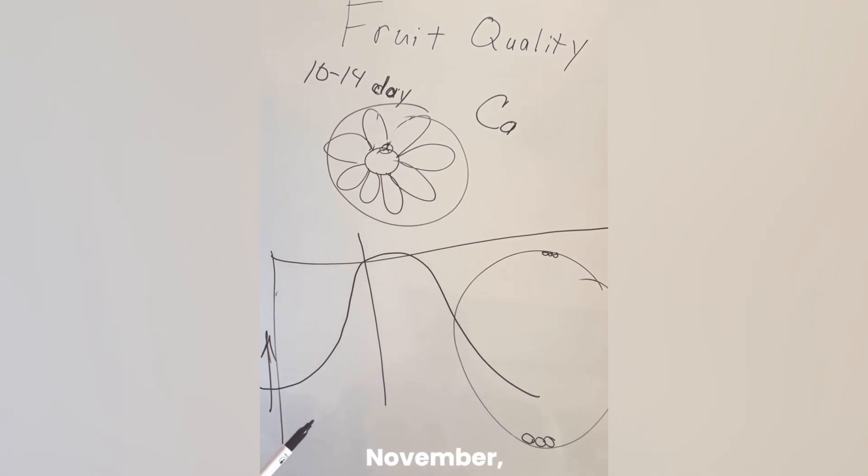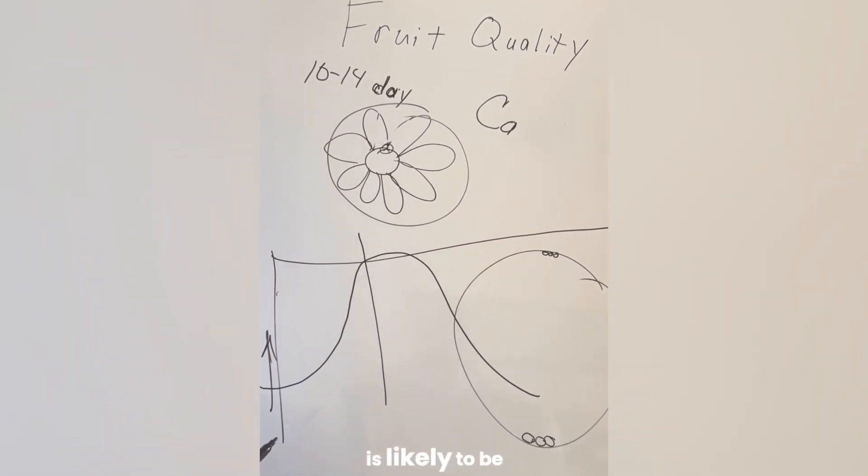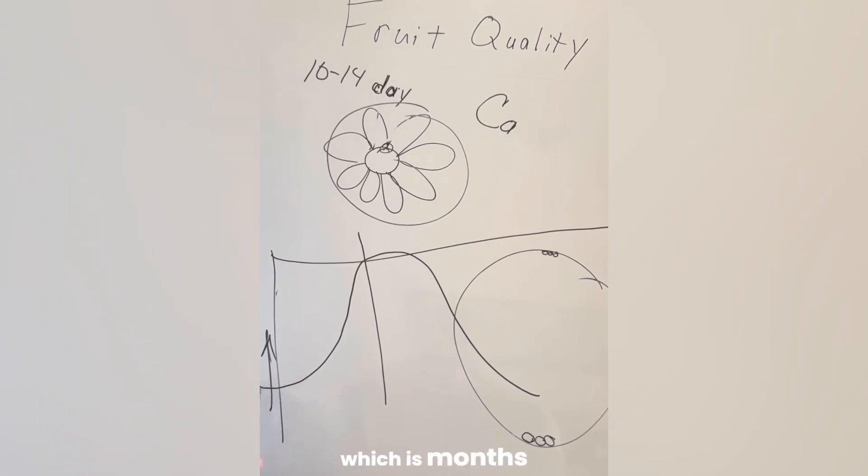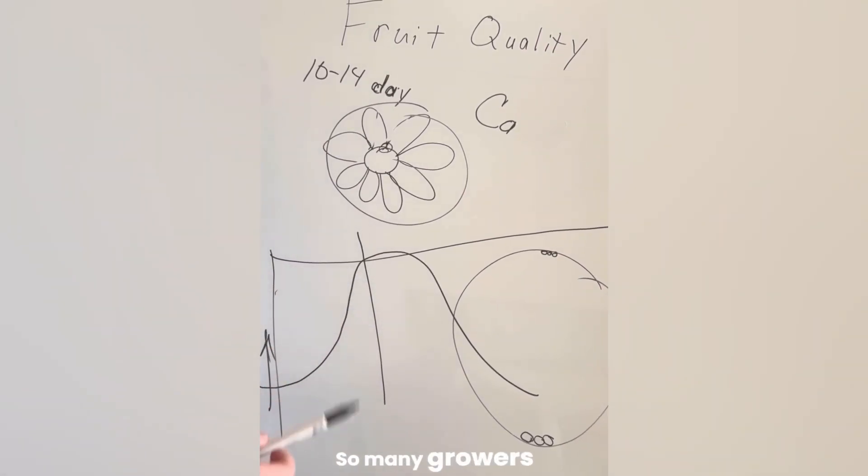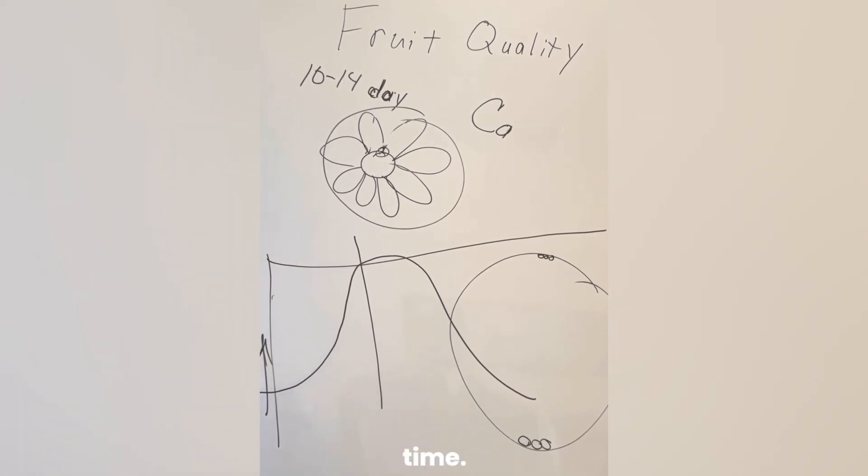Well, if you put a product on in November, that means your peak is likely to be in January or February, which is months before you need it. So many growers are actually doing the right thing, but at the wrong time.